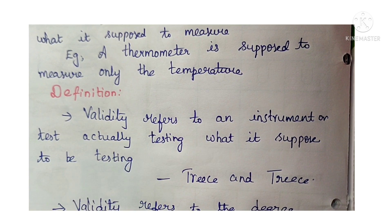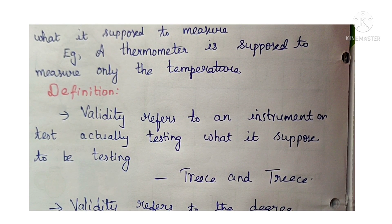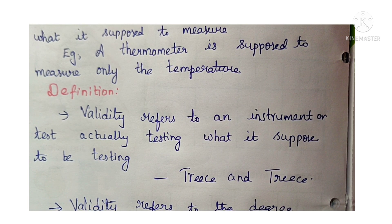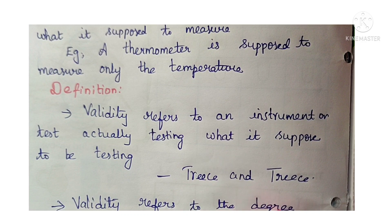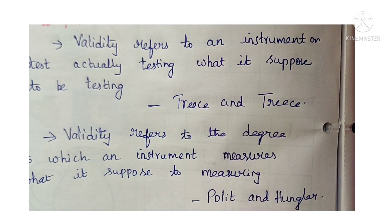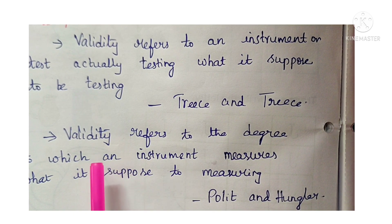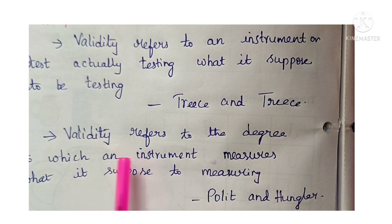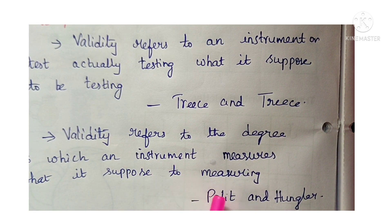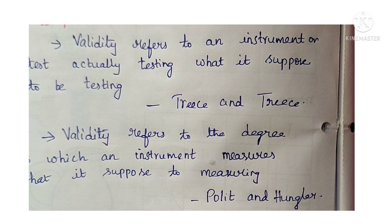Validity refers to an instrument or test actually testing what it is supposed to be testing — for example, if you want to assess the attitude of patients on HIV AIDS, you have to formulate a Likert scale suitable for assessing that attitude. This definition was given by Kerlinger. Another definition by Polit and Hungler: validity refers to the degree to which an instrument measures what it is supposed to measure.